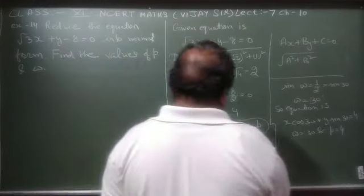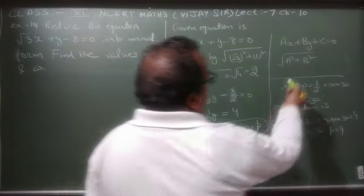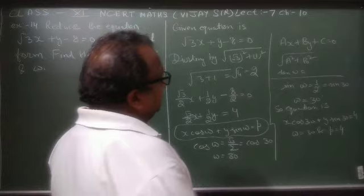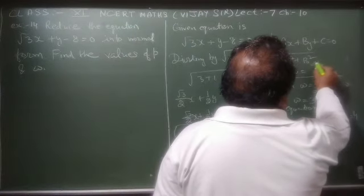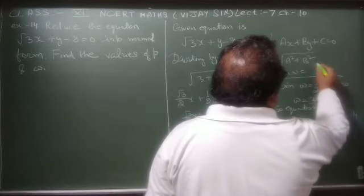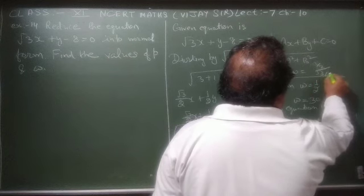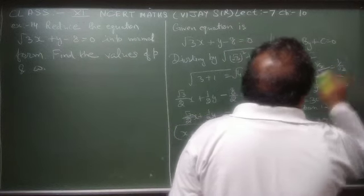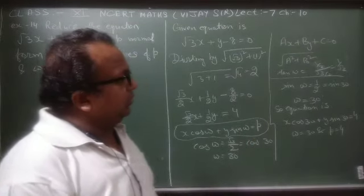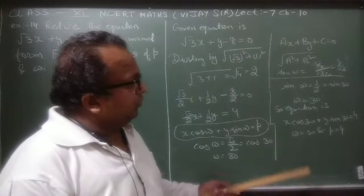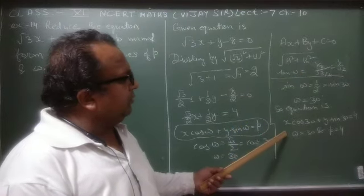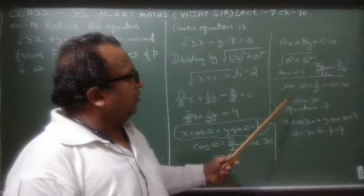हम इसको tangent की form में भी कर सकते हैं। tan ω = sin/cos = (1/2) ÷ (√3/2) = 1/√3। cos और sin दोनों positive हैं, tangent भी positive है, तो first quadrant में है। tan 30° = 1/√3, इसलिए ω = 30°।